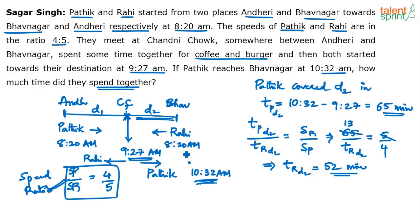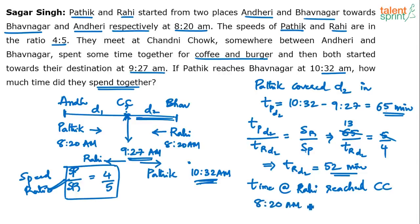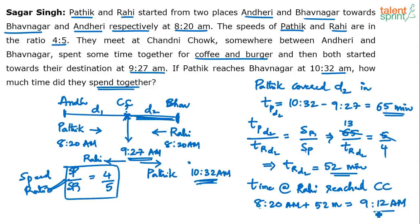Rahi started at 8:20am and took 52 minutes to cover d2 and reach Chandni Chowk. So 8:20am plus 52 minutes: 20 plus 52 is 72 minutes, which is 1 hour and 12 minutes. So 8 hours plus 1 hour 12 minutes equals 9:12am. Rahi reached Chandni Chowk at 9:12am, which means both Pathik and Rahi met at Chandni Chowk at 9:12am.